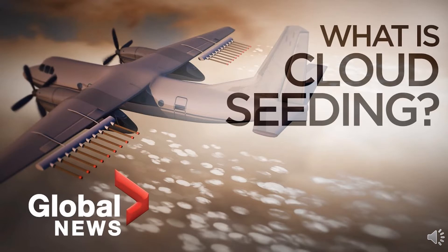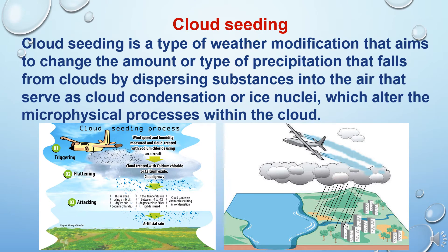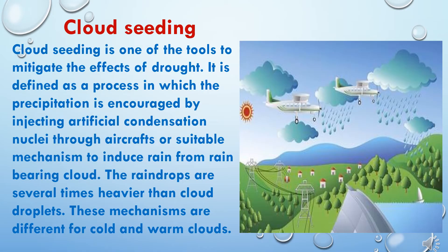What is cloud seeding? Cloud seeding is a type of weather modification that aims to change the amount or type of precipitation that falls from clouds by dispersing substances into the air that serve as cloud condensation or ice nuclei, which alter the microphysical processes within the cloud. Cloud seeding is one of the tools to mitigate the effects of drought. It is defined as a process in which precipitation is increased by injecting artificial condensation nuclei through aircraft or suitable mechanisms to induce rain from rain-bearing clouds.